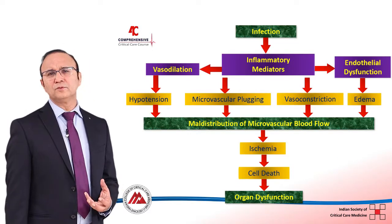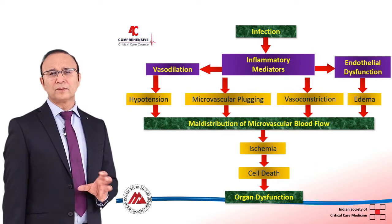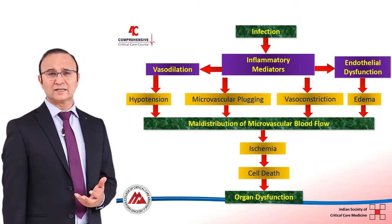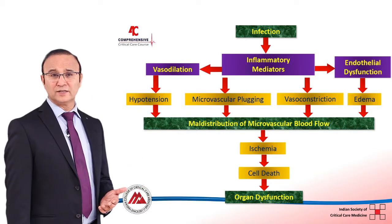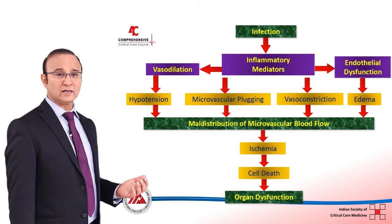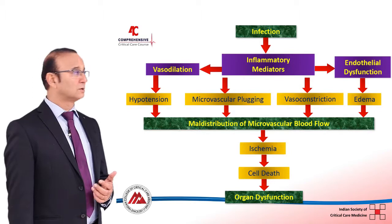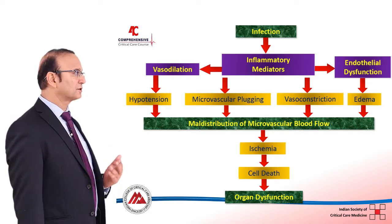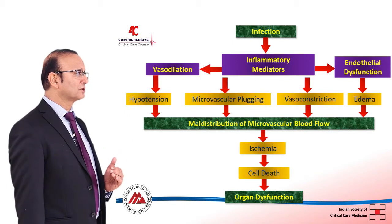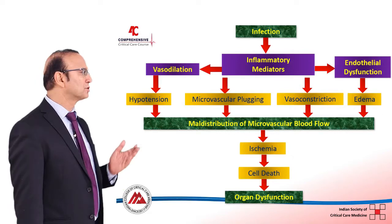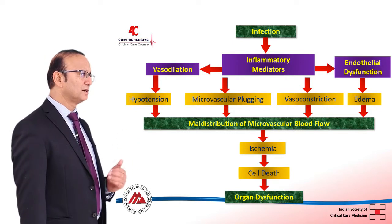I will just give you a brief overview of the pathophysiology of sepsis. It's very complicated but I'm going to give you a basic structure of how it occurs. Whenever a person gets an infection, depending on the host response — which can be different in different individuals — there will be a release of inflammatory mediators, some of which can result in vasodilatation, some in endothelial dysfunction, and they can also cause vasoconstriction and microvascular plugging. Vasodilatation results in hypotension, endothelial dysfunction results in edema, and together these cause maldistribution of microvascular blood flow, decreased tissue perfusion, ischemia, cell death and organ dysfunction.